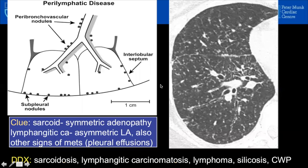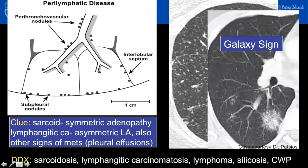Perilymphatic nodules, in contrast, are found along the pleural surfaces and along the fissures. Notice how we have nodules studding the airways — a very common distribution for sarcoidosis. To differentiate sarcoid from lymphangitic carcinomatosis, I often look at the adenopathy, which tends to be symmetric in sarcoid and can be quite asymmetric in lymphangitic carcinomatosis. In sarcoidosis, sometimes the granulomas coalesce to form the galaxy sign, similar to stars in a galaxy.